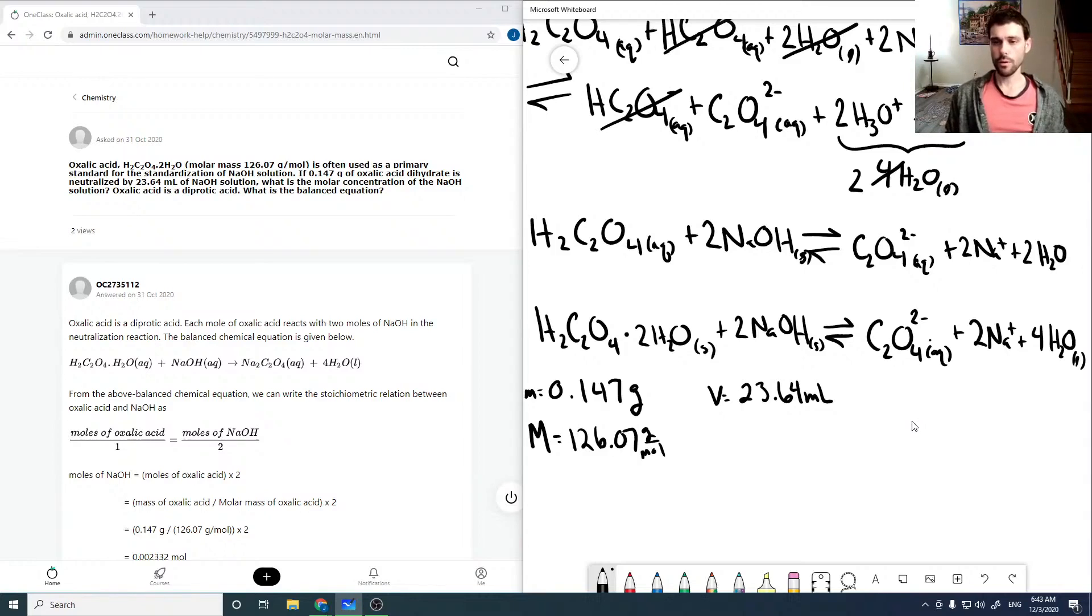And so, and we have a volume of NaOH that's added to completely balance this, or to give us a neutral solution. So first we need to find the number of moles of our oxalic acid that we've added. So that would be the mass over the molar mass, which would be 0.147 grams over 126.07 grams per mole. And if we run this through our calculator, we get 1.166 times 10 to the minus 3 moles.